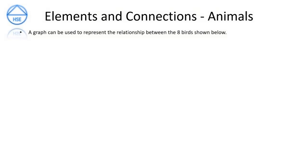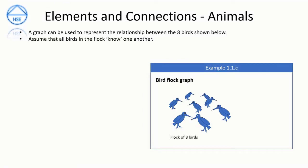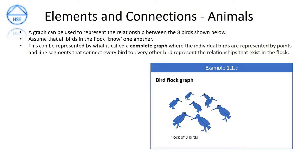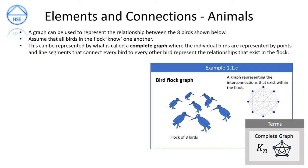Elements and connections — animals. A graph can be used to represent the relationship between eight birds shown below in Example 1.1.c, the bird flock diagram. Assume that all the birds in the flock know one another. The graph of this relationship is called a complete graph, where the individual birds are represented by points and line segments connecting every bird to every other bird represent the relations in the flock. Note that every node in the diagram is connected to every other node by a link — or every point is connected to every other point by a line segment. This brings us to the key term of complete graphs.